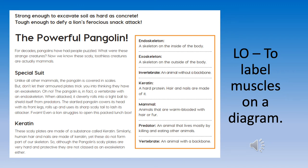Keratin — these scaly plates are made up of a substance called keratin. Similarly, human hair and nails are made of keratin, yet these do not form part of our skeleton. So although the pangolin's scaly plates are very hard and protective, they are not classed as an exoskeleton either.